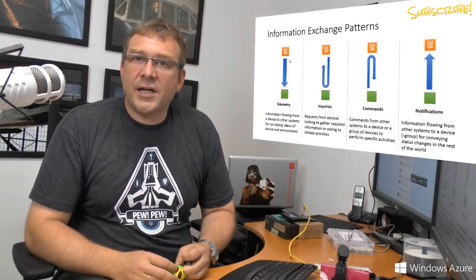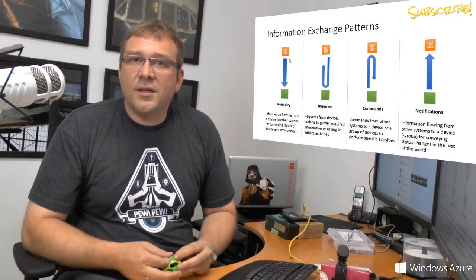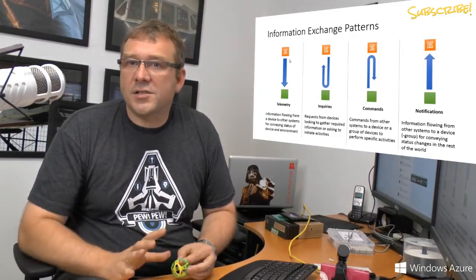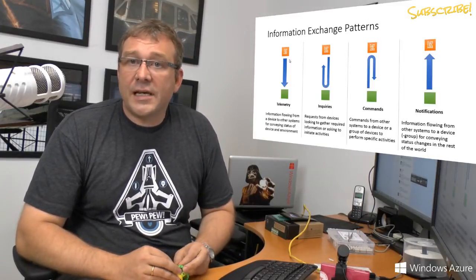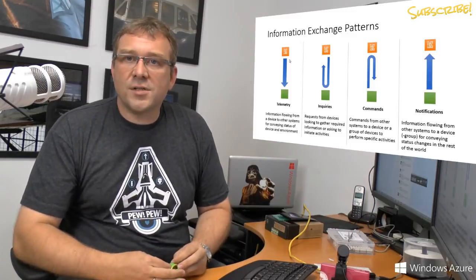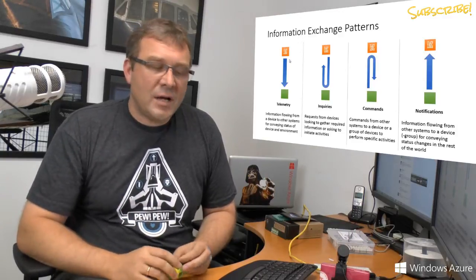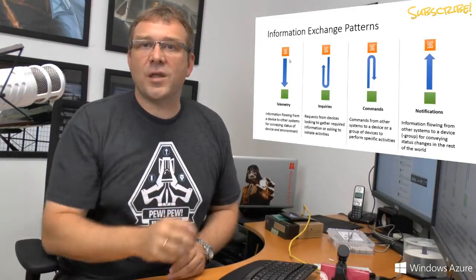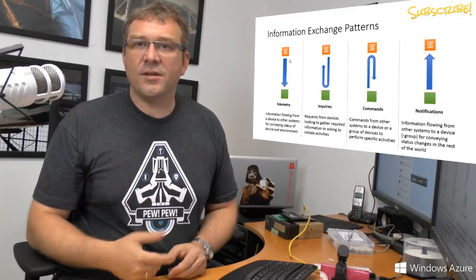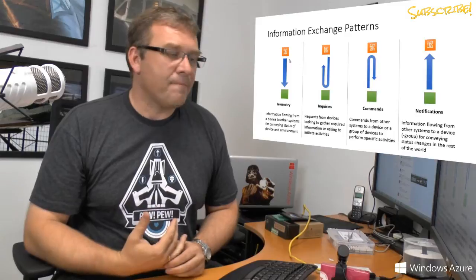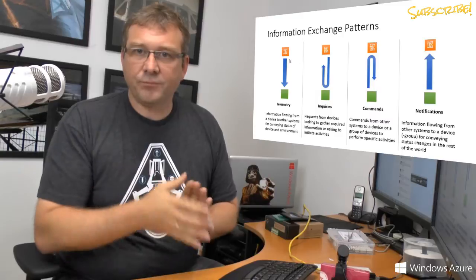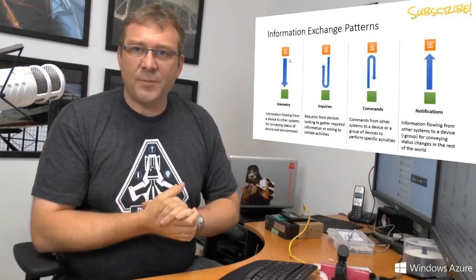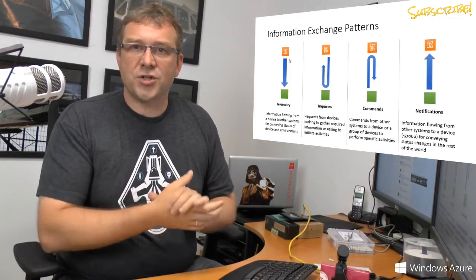None of these patterns imply a particular assurance about delivery. They might be best-effort or even lossy — certainly for telemetry sent every second, loss is usually okay. With notifications, some messages are critical and require higher assurance, but that's independent of the pattern. A notification is a one-way thing where the device decides whether to act; a command is where someone has decided the device ought to act. That's the key difference.